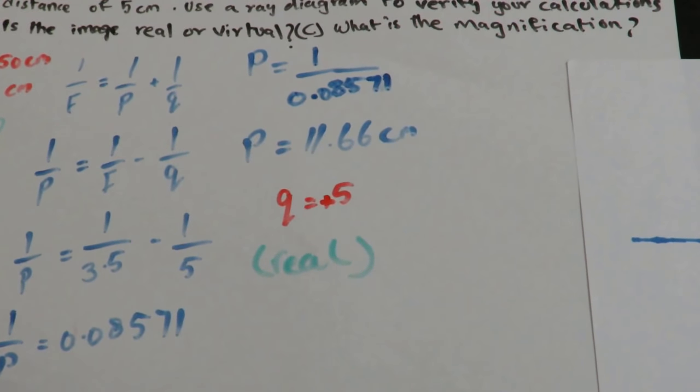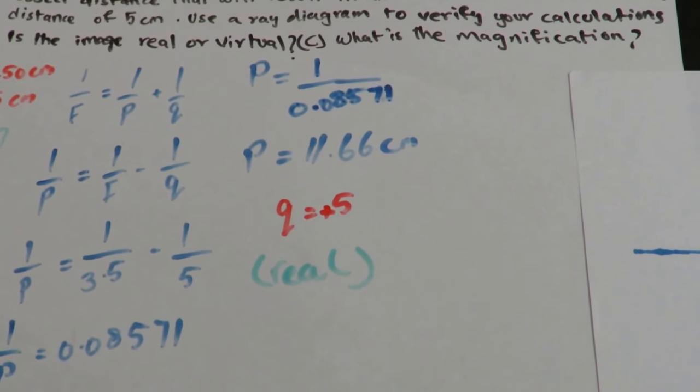But if it was negative, that means that the image is virtual.